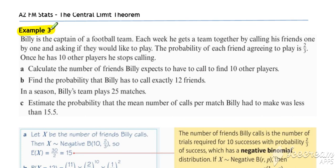In Example 3, Billy is the captain of a football team. Each week he gets a team together by calling his friends one by one and asking if they would play. The probability of each friend agreeing to play is two-thirds. Once he has 10 other players, he stops calling.